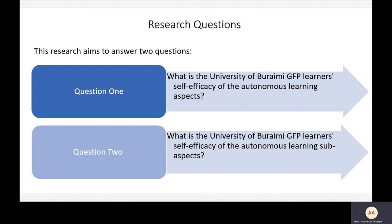In this research, there are two questions. The first question is: what is the University of Bramie GFP learner self-efficacy of autonomous learning aspects? The second question is: what is the University of Bramie GFP learner self-efficacy of the autonomous learning sub-aspects?